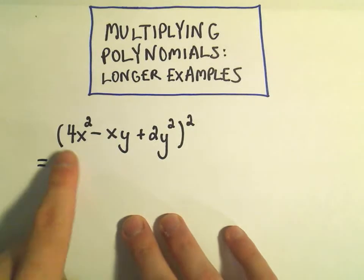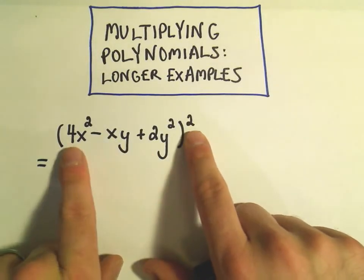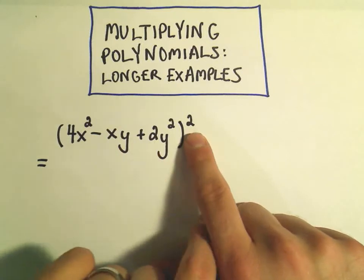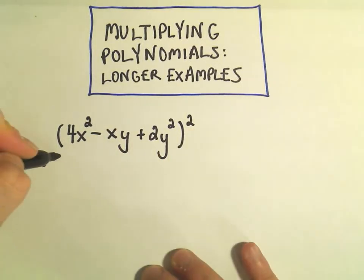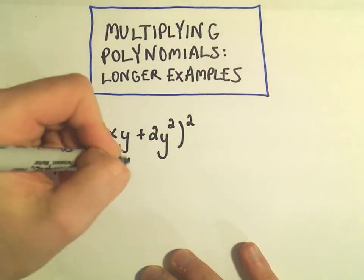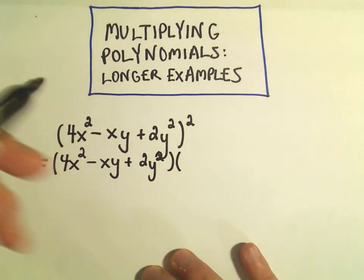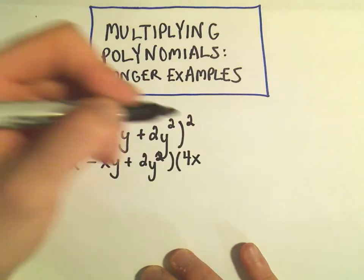The first thing I'm going to do, so we've got all this squared. Again, one of the classic mistakes would be to simply square each term and be done with it, and if only it were that easy. So that would be incorrect to do. So what we have to do, I always write it down. If it's squared, it means it's multiplied by itself twice.